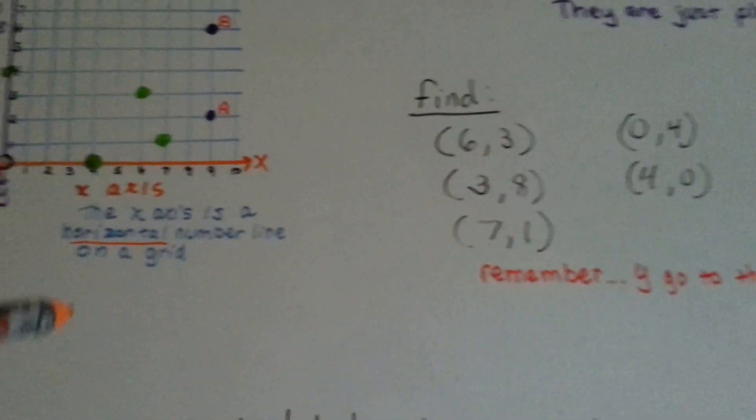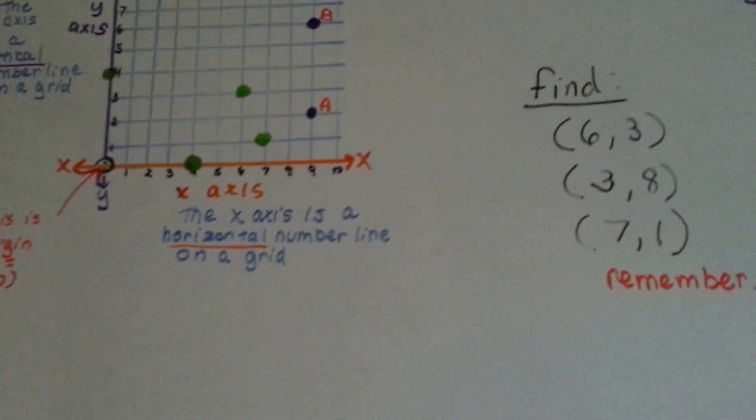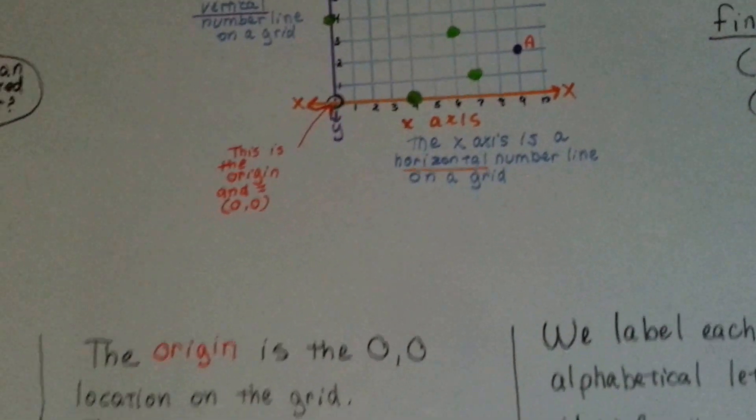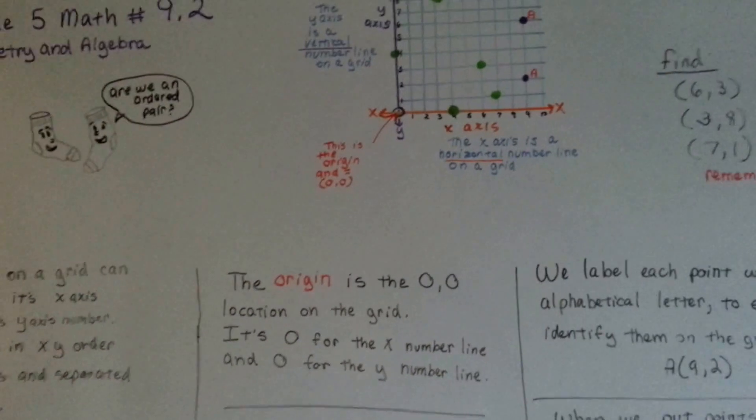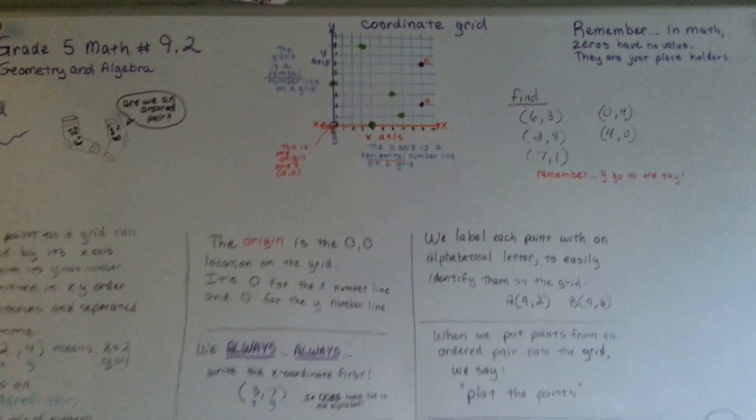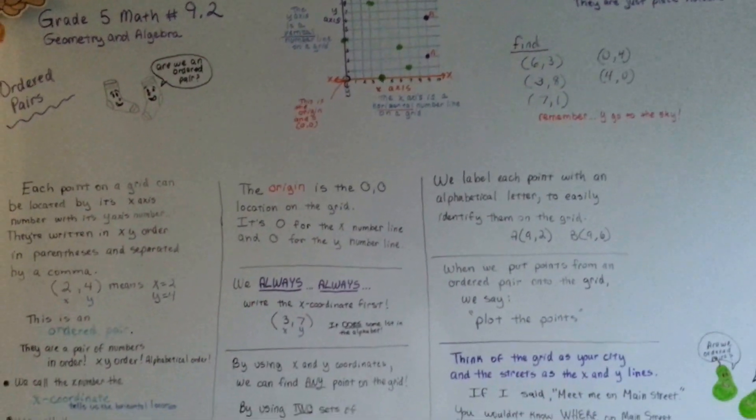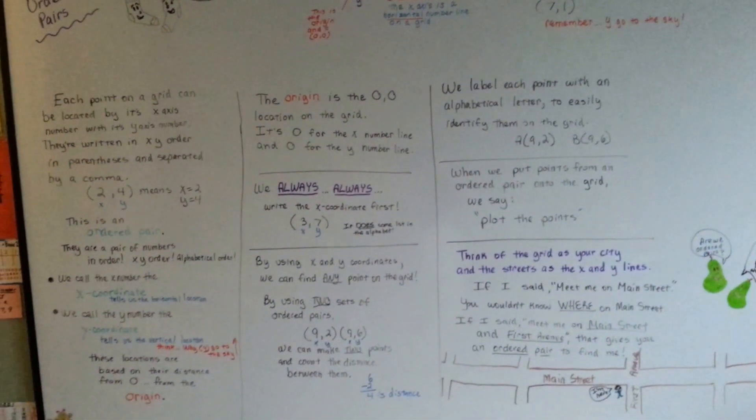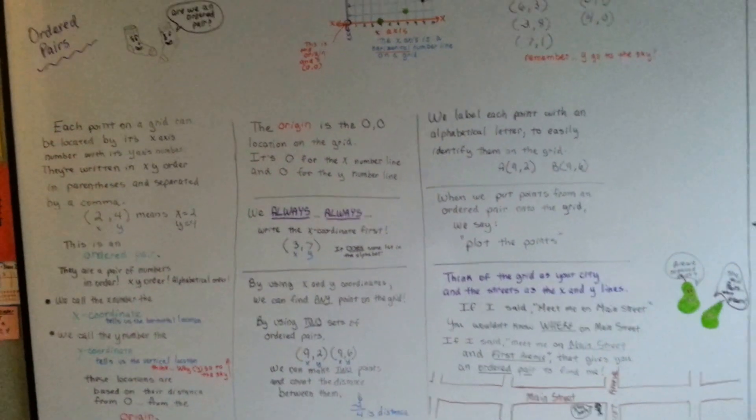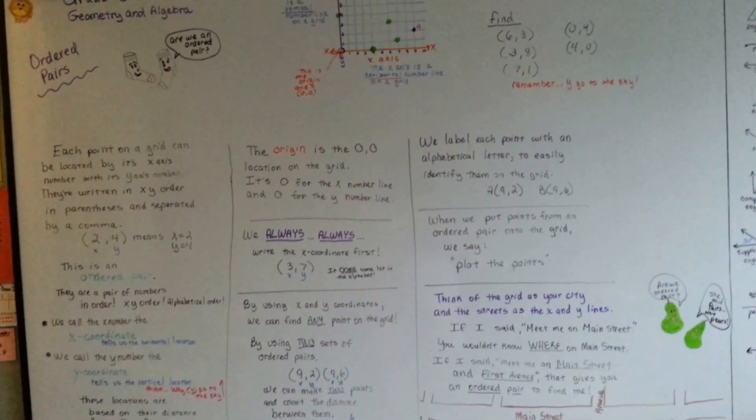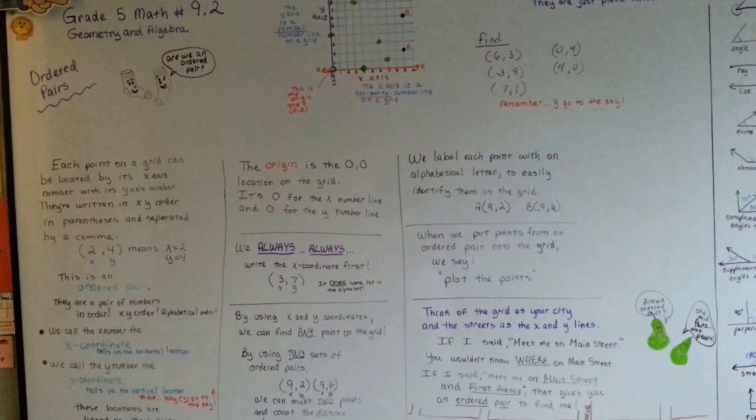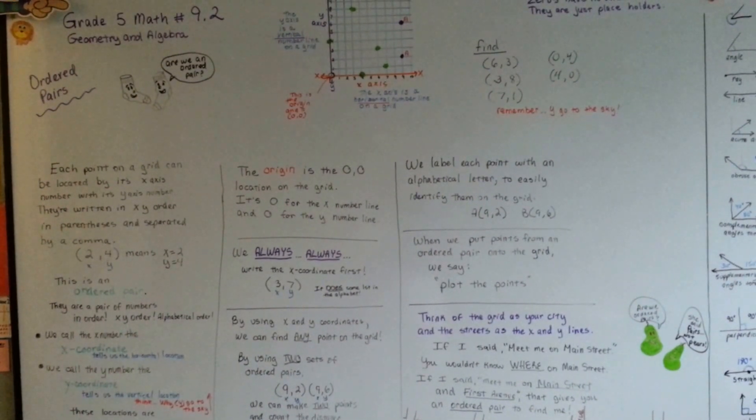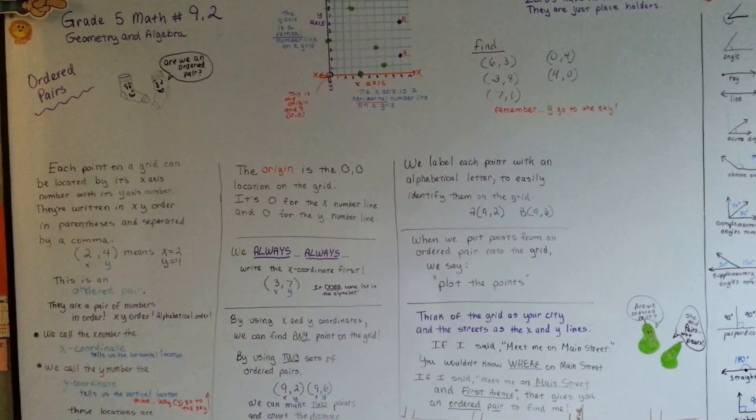Just remember, y go to the sky, so the y is the one going up and down. Now you know what an ordered pair is, you know what a coordinate grid is, you know how to plot points, and you know what the two numbers in the parentheses mean. You know where the origin is. So now you can try plotting some points, and I'll see you next video.